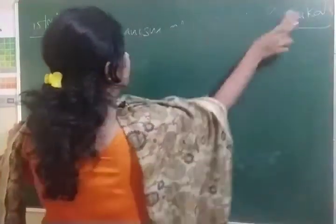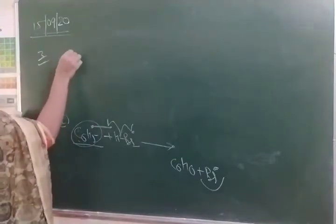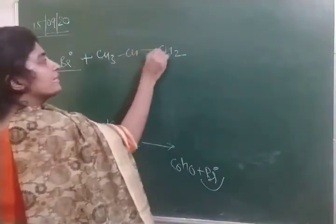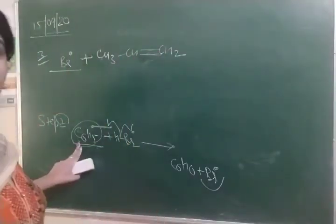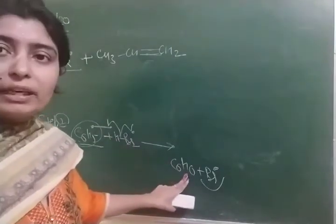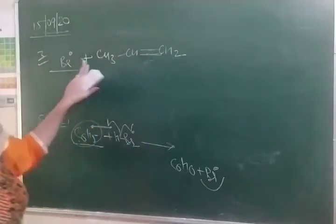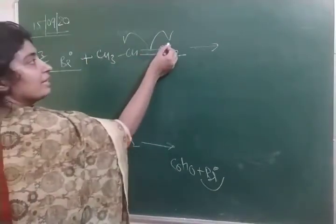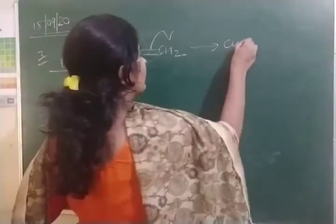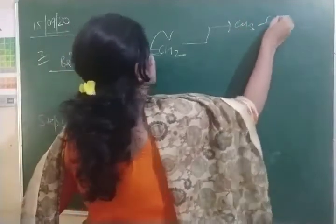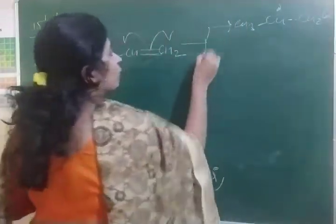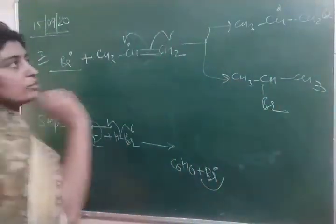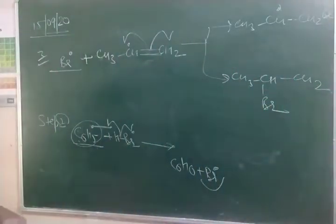Now in the third step, the Br• radical reacts with propene. Propene also undergoes homolytic cleavage due to the radical. There are two possibilities: either Br attaches to the first carbon, leaving a radical on the second carbon, or Br attaches to the second carbon, leaving a radical on the first carbon. So there are two possibilities. Possibility one: CH₃-CH•-CH₂Br — Br on first carbon, radical on second. Possibility two: CH₃-CHBr-CH₂• — Br on second carbon, radical on first.